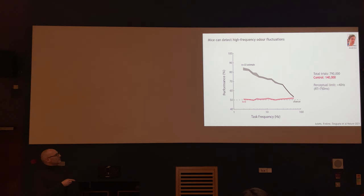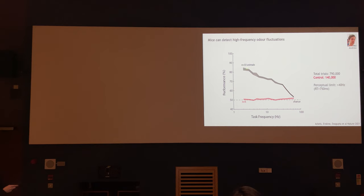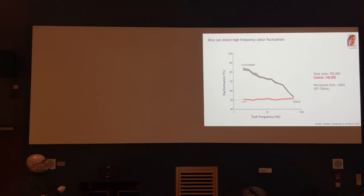As a population of animals, the beauty of these automated behavioral systems is you can do a large number of trials — almost 900,000 trials distributed across around 40 animals. The performance — whether they can correctly discriminate fluctuations at a given frequency — is very high for low frequencies and gradually declines to chance levels only at around 60 hertz. That means animals and mammals have access to information in these rich, wafting odor plumes at frequencies up to 50 hertz and above.